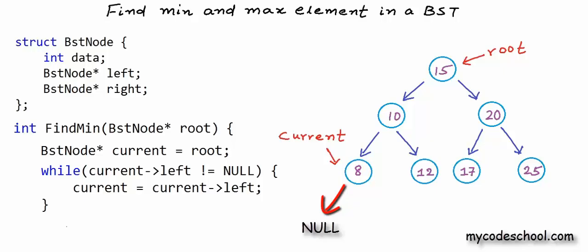We will come out of the while loop and at this point the node that we are pointing to has minimum value. So we can return the data in that node.